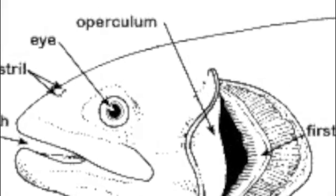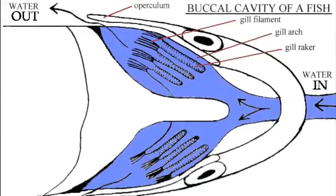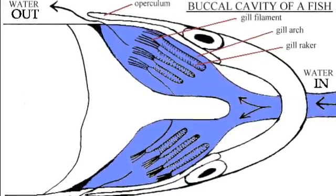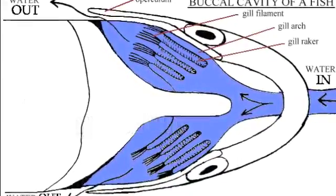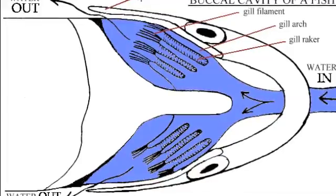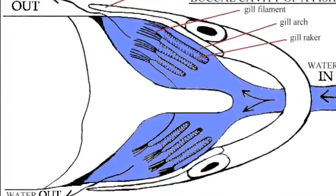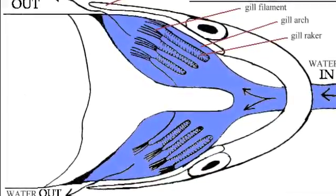In fish, the long bony cover for the gill is called the operculum. It can be used for pushing water. Without an operculum, other methods such as ventilation are required.